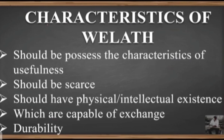The fourth characteristic is that wealth must be capable of exchange. Wealth is meant to satisfy our present as well as our future consumption needs. For example, a house purchased today satisfies our present housing need and can be sold in the future to buy other goods. Precious metals and land also possess this characteristic — they give satisfaction and can be sold in the future to buy other goods.